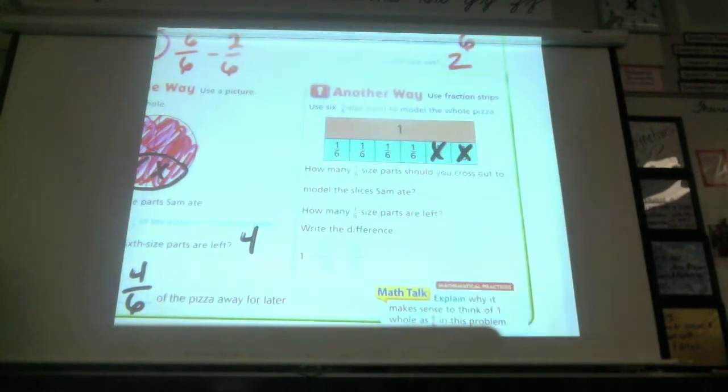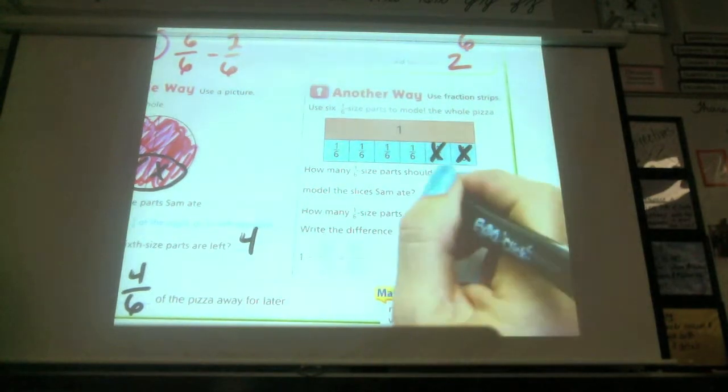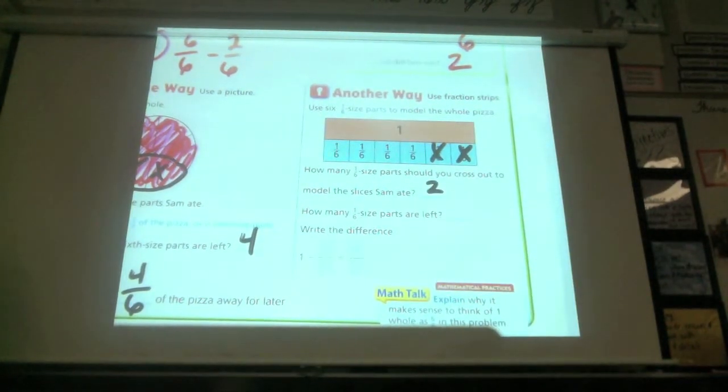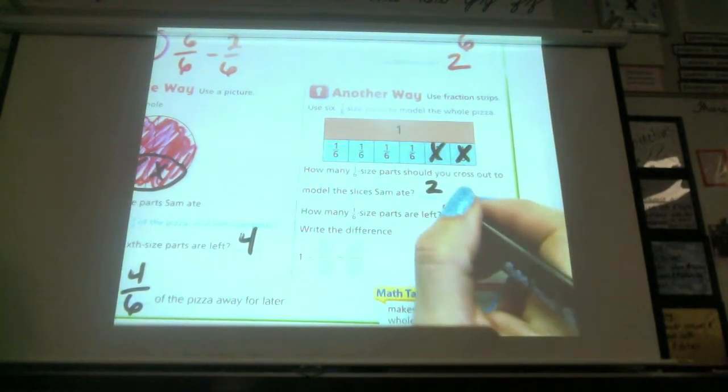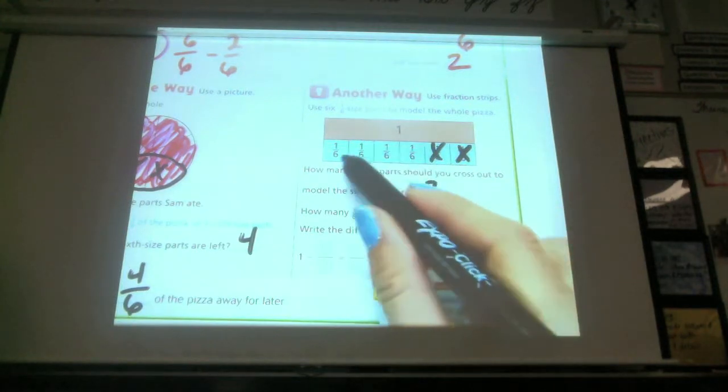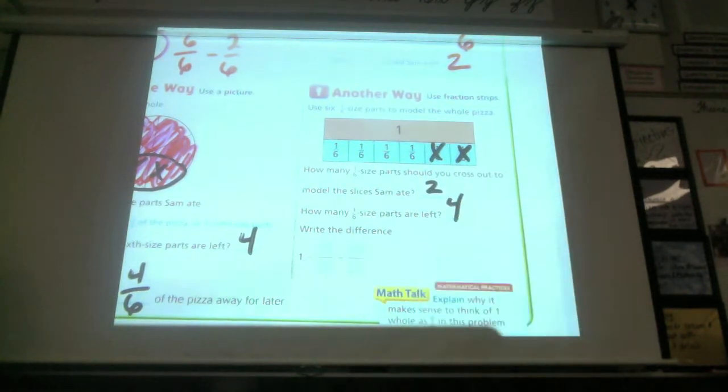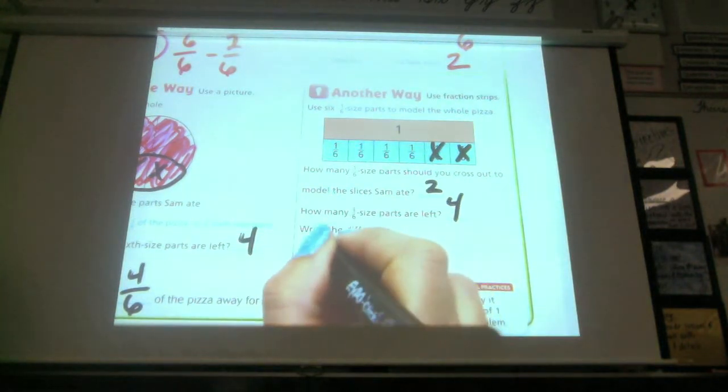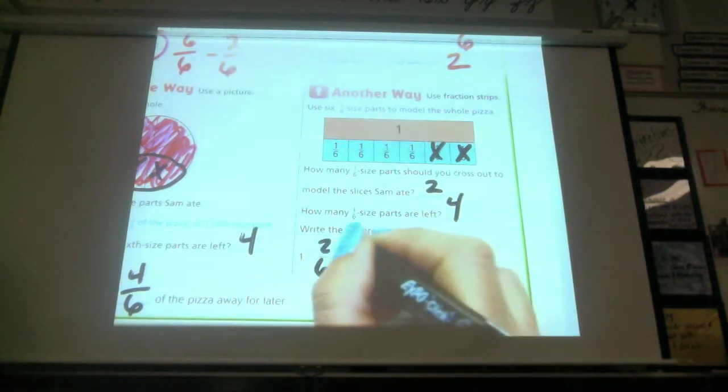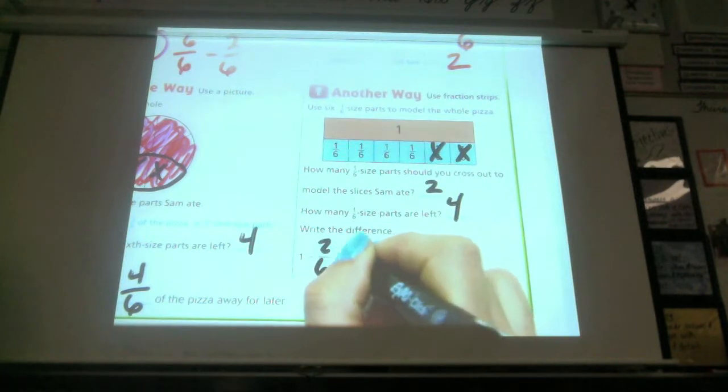How many one-sixth-size pieces are left? Four. Four. So one whole minus two-sixths equals four-sixths. Four-sixths.